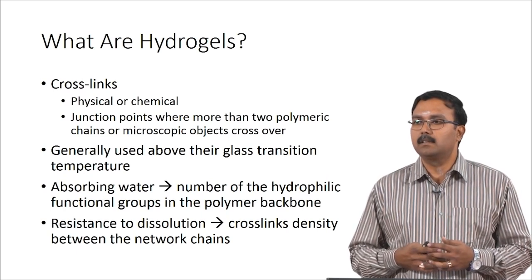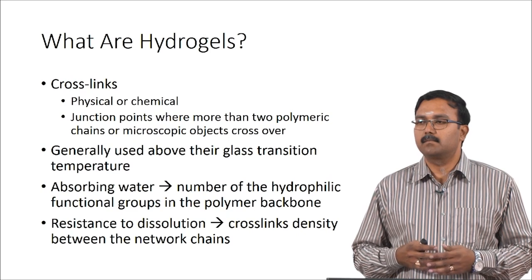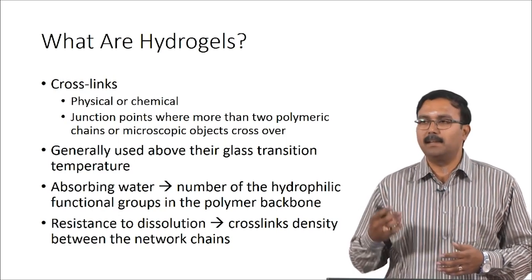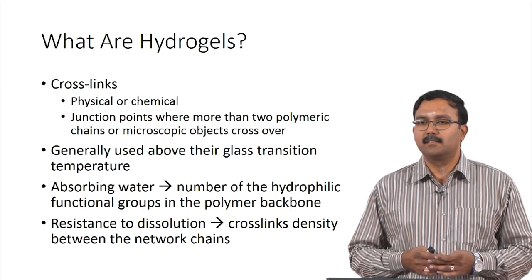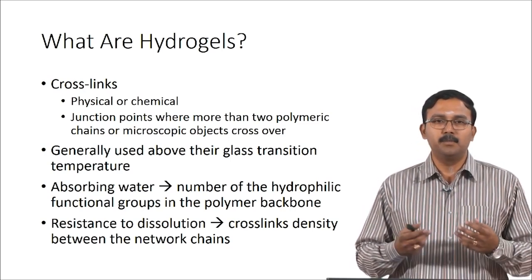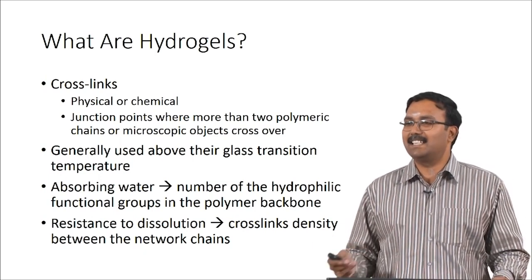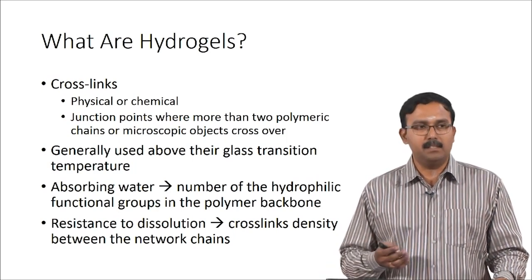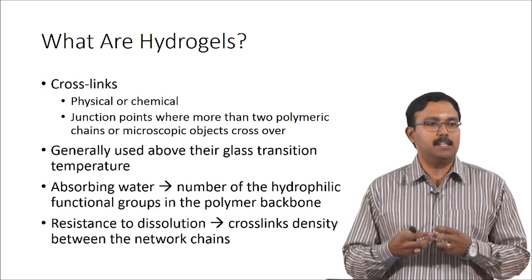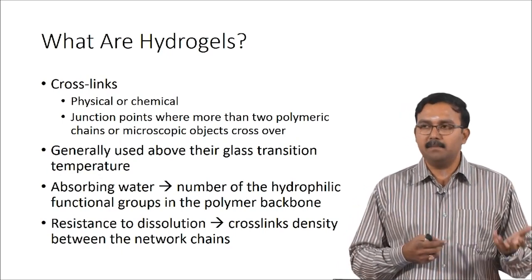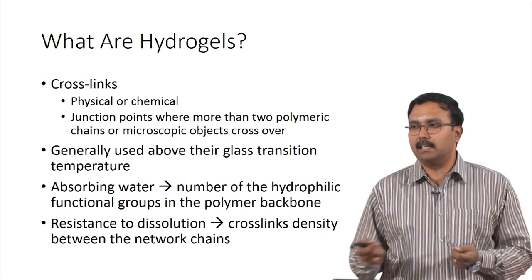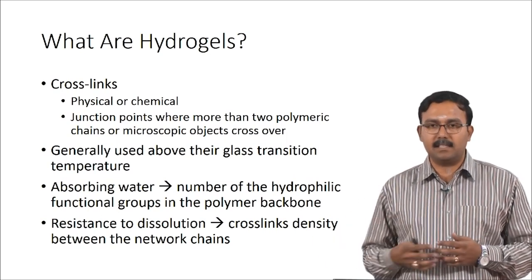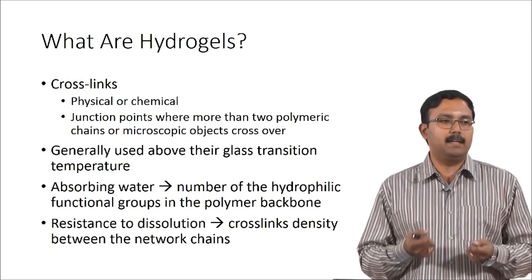What is the glass transition temperature? In polymer chemistry and basic material science, above this temperature the material will behave like a rubber, whereas below it, it will be a solid — it will be like a glass. From a glassy state it will move to a rubbery state, and that transition happens at a temperature called the glass transition temperature. Hydrogels will be used at temperatures higher than the glass transition temperature so that they will have a rubbery texture.